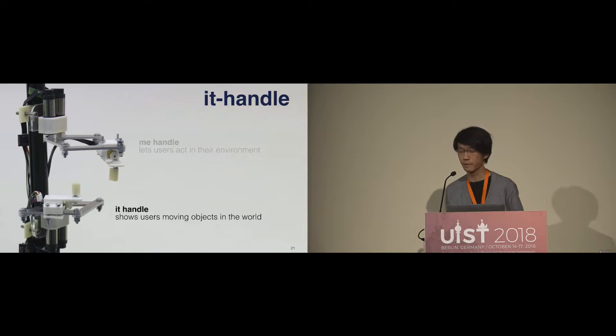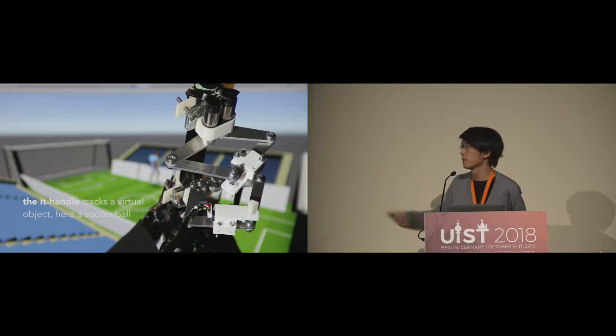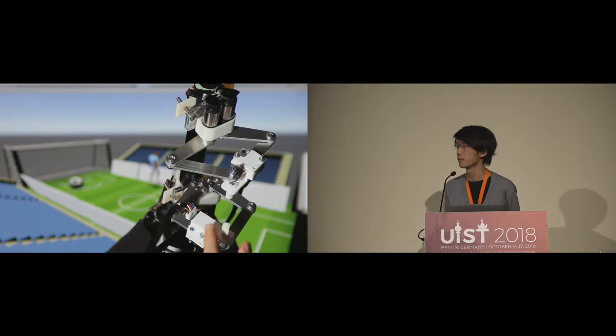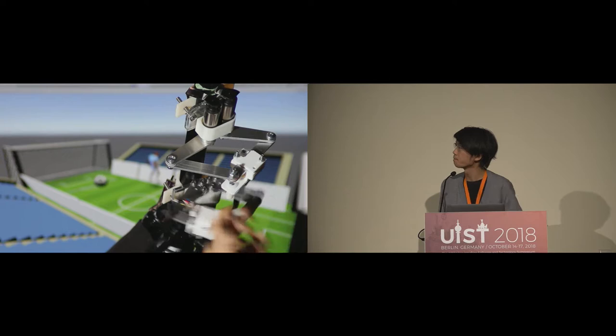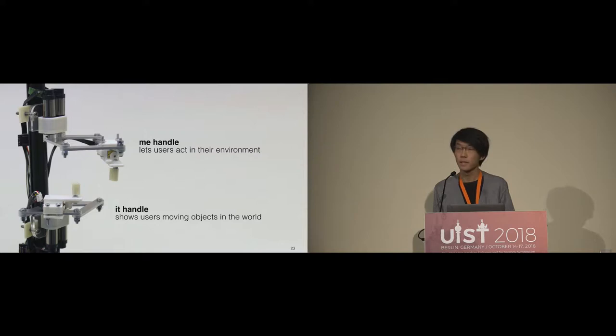When we encounter moving objects in the virtual world — in this example, a soccer ball — the it handle can do the job. The system will actuate the it handle to show the position of the soccer ball in the field. The user can hold the it handle and sense the position of the soccer ball at any moment.